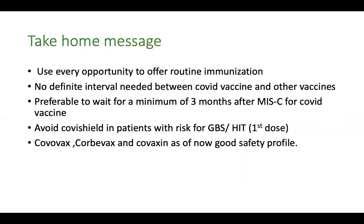Final take-home messages: use every opportunity to offer routine immunization. No definite interval is needed between COVID vaccine and other vaccines. Preferable to wait a minimum of three months after MIS-C before giving COVID vaccine. Avoid Covishield in patients with risk of GBS and HIT. Covovax, Corbivax, and Covaxin, currently being used in children less than 18 years of age, are showing excellent safety profiles. Thank you.